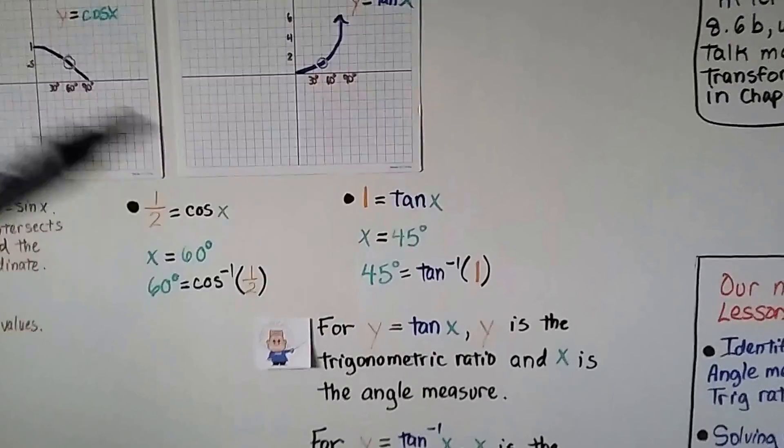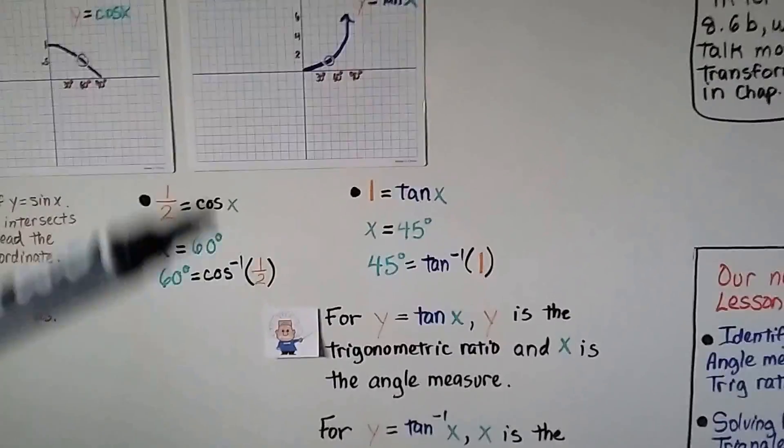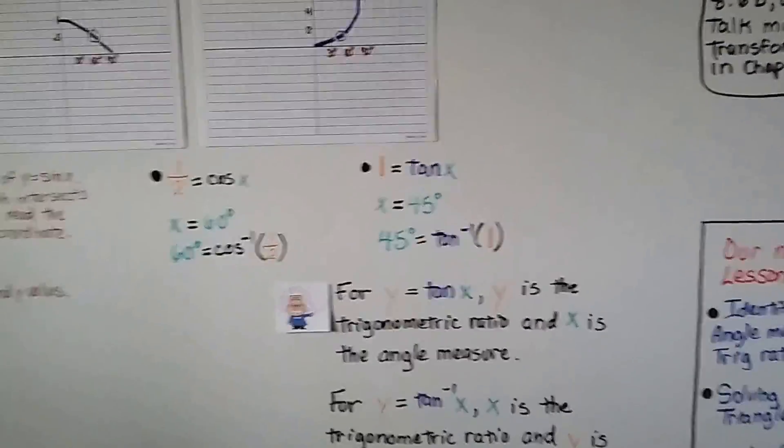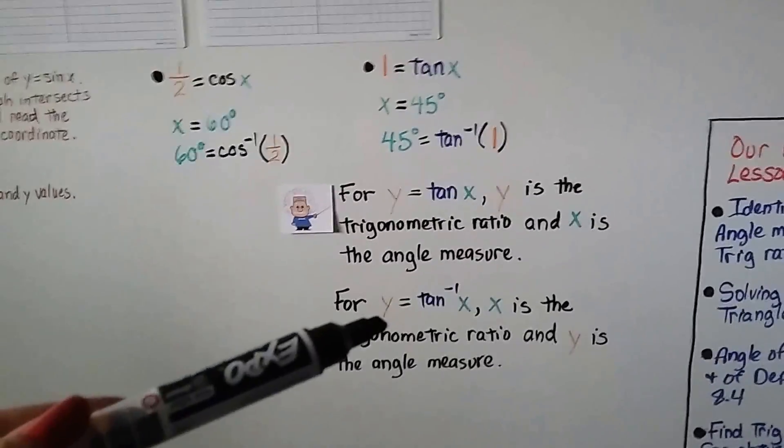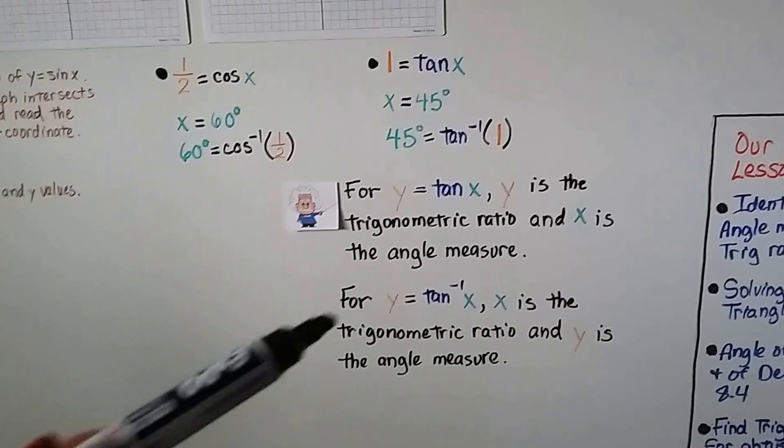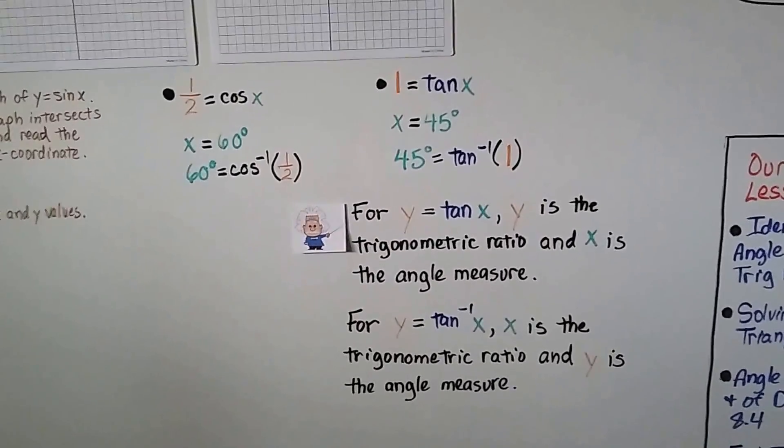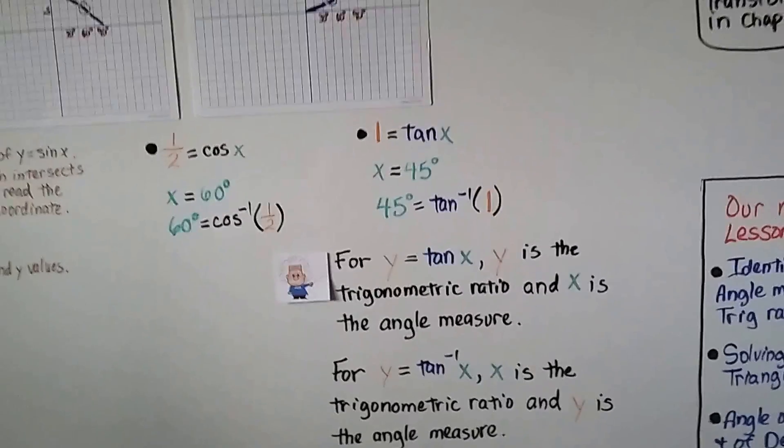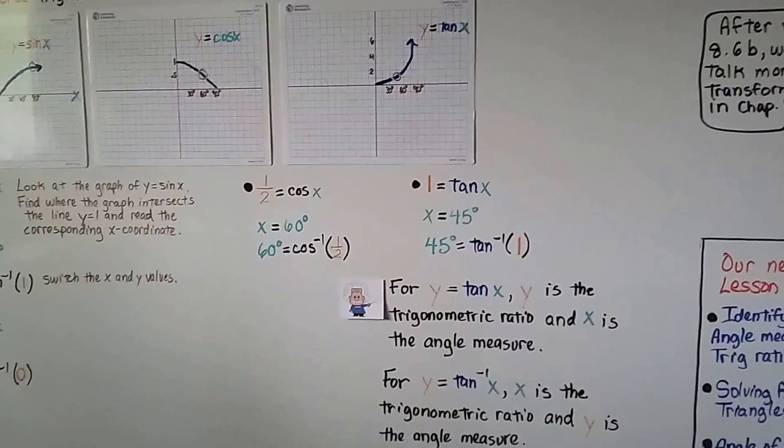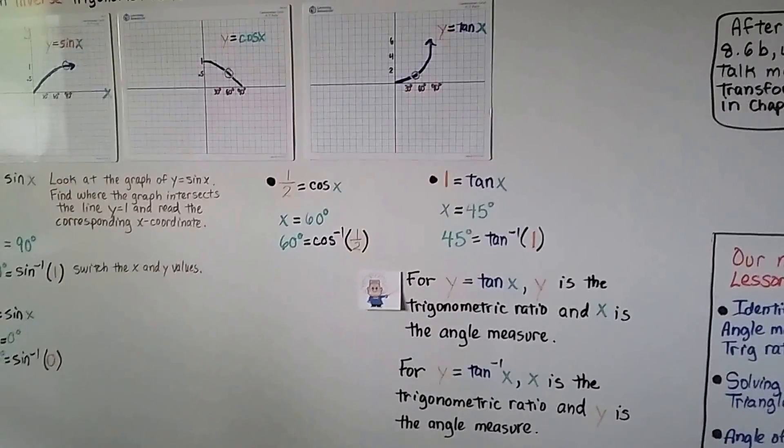For y equals the tangent of x, y is the trigonometric ratio and x is the angle measure. For y equals the inverse tangent of x, x is the trigonometric ratio and y is the angle measure. I know these can be confusing. If you have to watch the video again a second time real quick, that's okay.